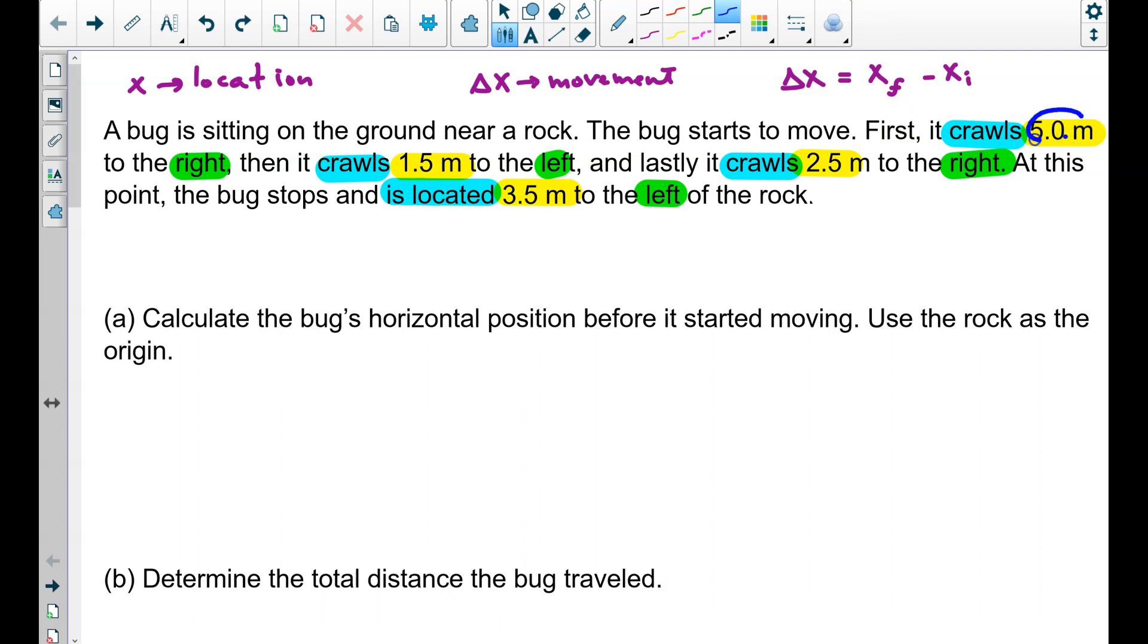We have 5 meters to the right, so positive 5. We also have 1.5 meters to the left, so I make it negative. 2.5 meters to the right, positive. 3.5 meters to the left, negative. Writing the values like I've done is a good start, but it's not enough. We have to identify these.